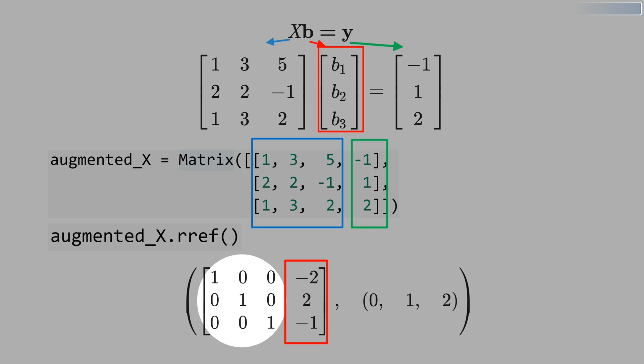The advantage of SymPy is that you get the reduced form, and you get this 0, 1, 2 that indicates the columns that are linearly independent.